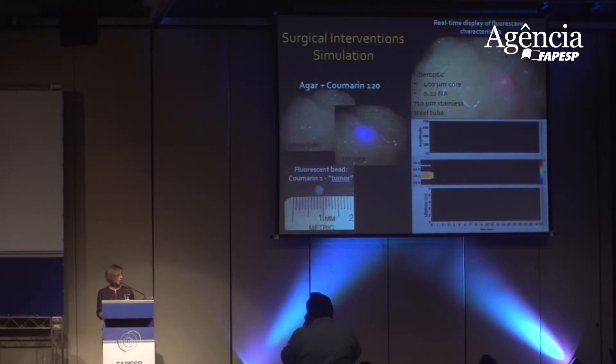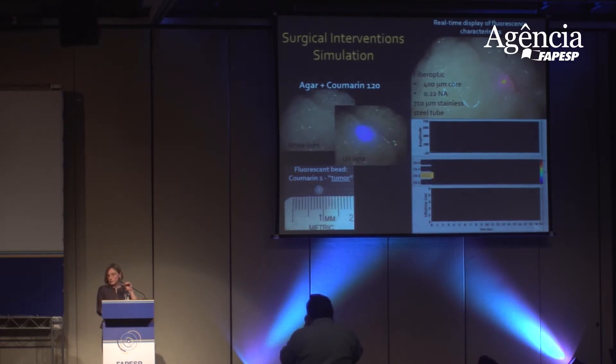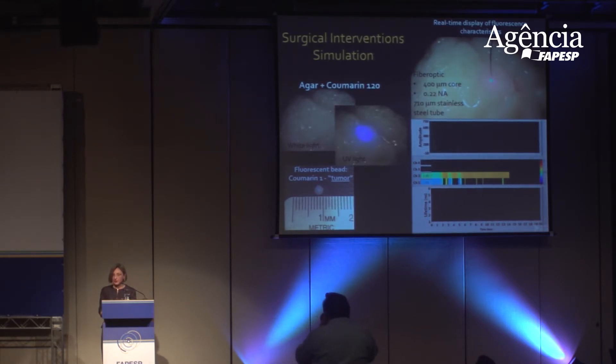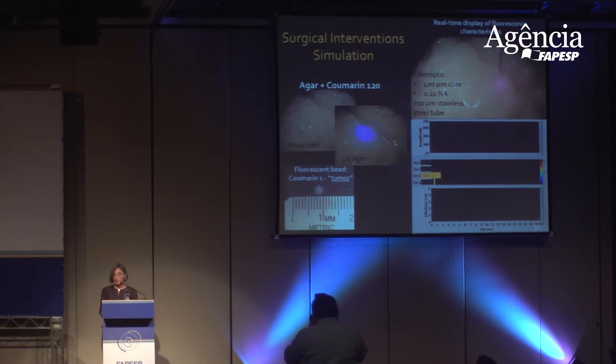What we see on the left side is a tissue phantom — embedded in a brain tissue phantom are small tumors, basically agar embedding a coumarin-1 fluorophore — and the task is to use our fiber optic probe to distinguish in real-time the location of the tumor. You move the fiber optic across the surface, and when this little tumor is detected, you can see the color on the graph changes. In real-time, you can actually distinguish and identify the position of the tumor.